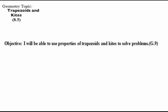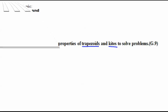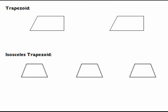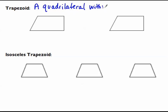Our objective in 8.5 is to use properties of trapezoids and kites. What is a trapezoid? Both a trapezoid and a kite is a type of quadrilateral. A trapezoid is a quadrilateral — remember that means it has four sides. It is a quadrilateral that has the following properties.